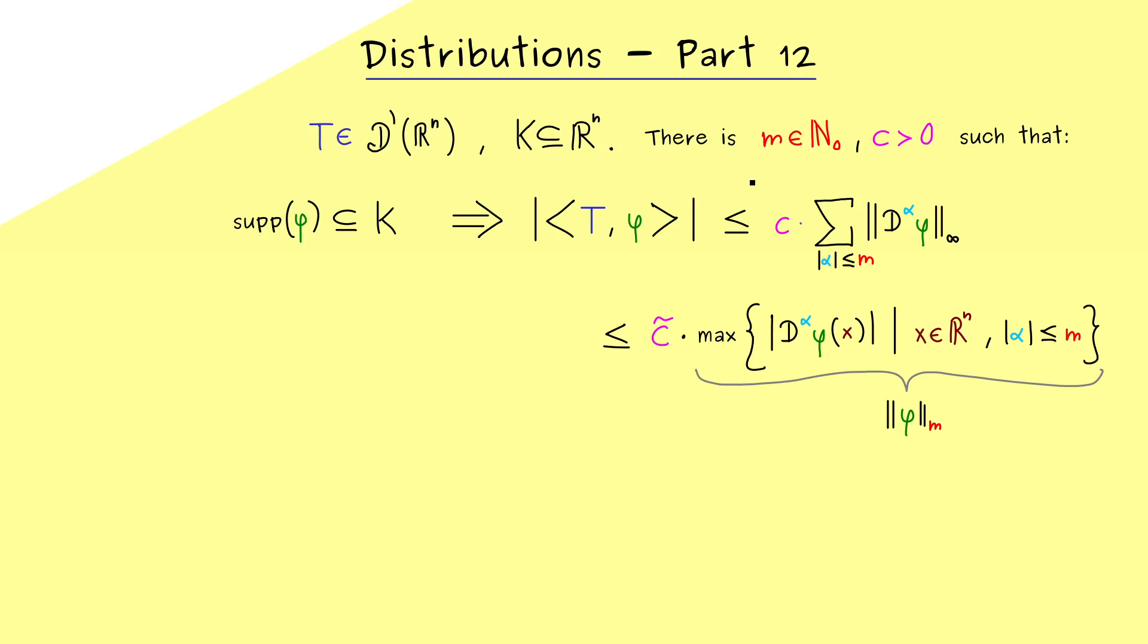And now we can ask the question, can we choose m minimally? Or to say it more precisely, can we choose m independently of the compact set K. So please recall, in general, if we make this compact set K larger we could also increase the integer m. However, now we don't want to do that, because now we want to change the order of the quantifiers.